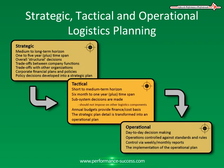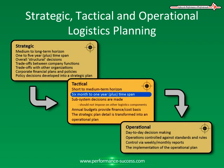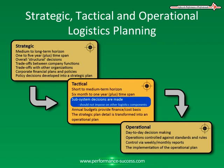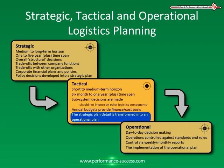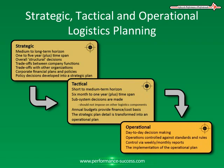Next, you have the tactical function. This is a short to medium term horizon, a six month to one year plus time span. This is where subsystem decisions are made; you should not impose on other logistics components. Annual budgets provide the finance cost basis, and the strategic plan detail is made into an operational plan.